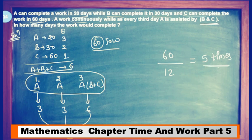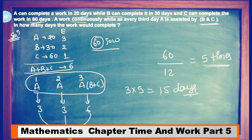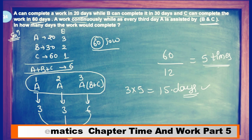5 complete cycles, with each cycle being 3 days, so 3 × 5 = 15 days total. Since it is completely divisible by 5, no extra work remains, so only 15 days are required to complete this work.